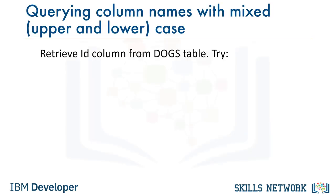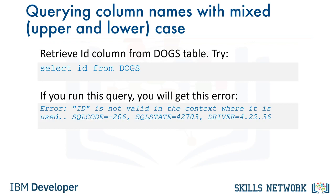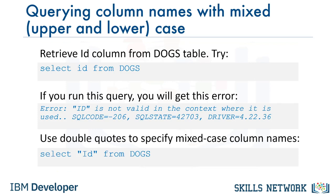Let's talk about querying column names that are lower or mixed case — that is, a combination of upper and lower case. Let's assume we loaded the dogs.csv file using the default column names from the CSV. If we try to retrieve the contents of the ID column using the query SELECT lowercase id FROM dogs, we'll get an error indicating that id is not valid. This is because the database parser assumes uppercase names by default, whereas when we loaded the CSV file, it had the ID column name in mixed case — an uppercase I and a lowercase d. To select data from a column with a mixed case name, we need to specify the column name in its correct case within double quotes, for example: SELECT "Id" FROM dogs.